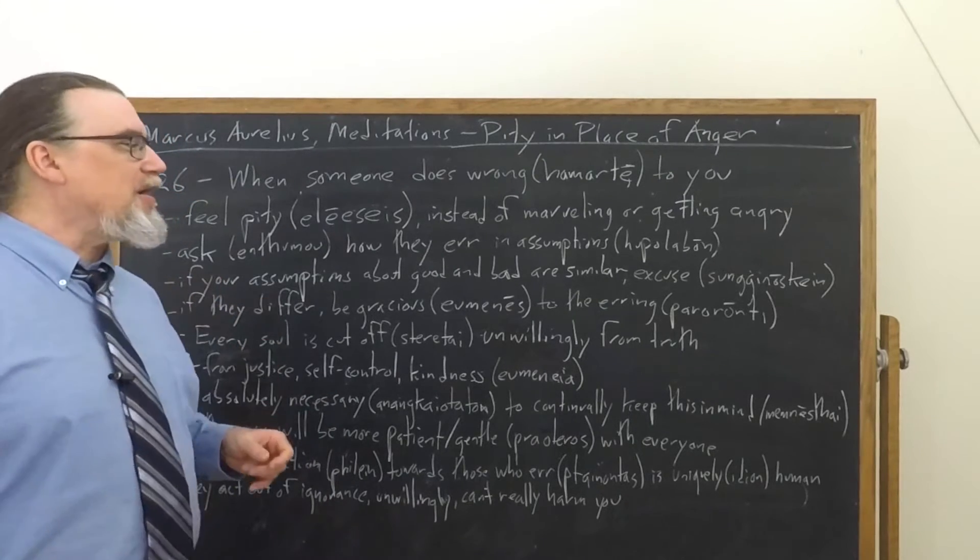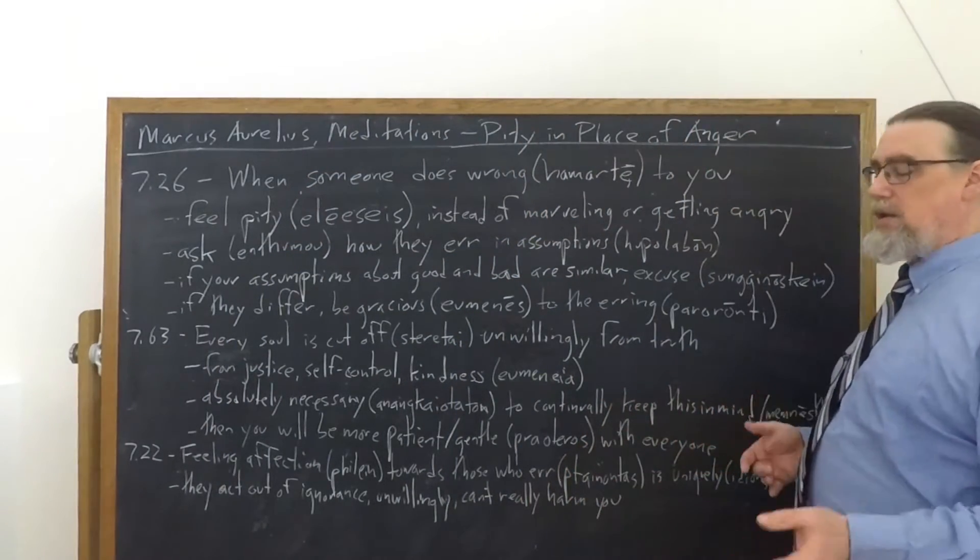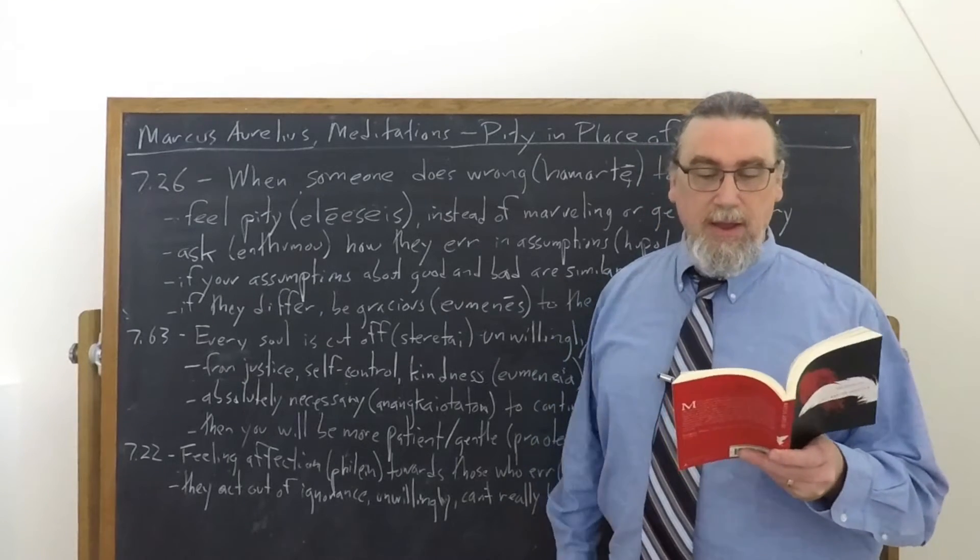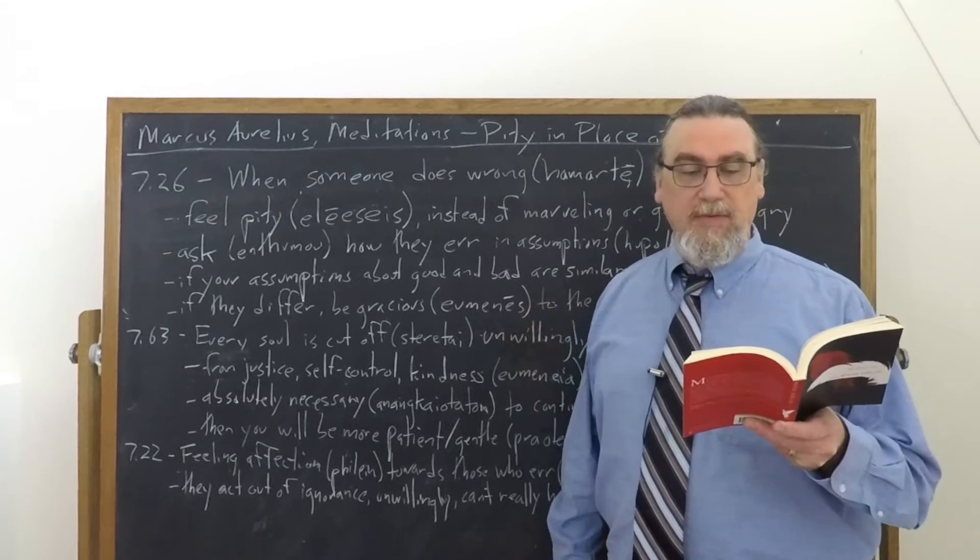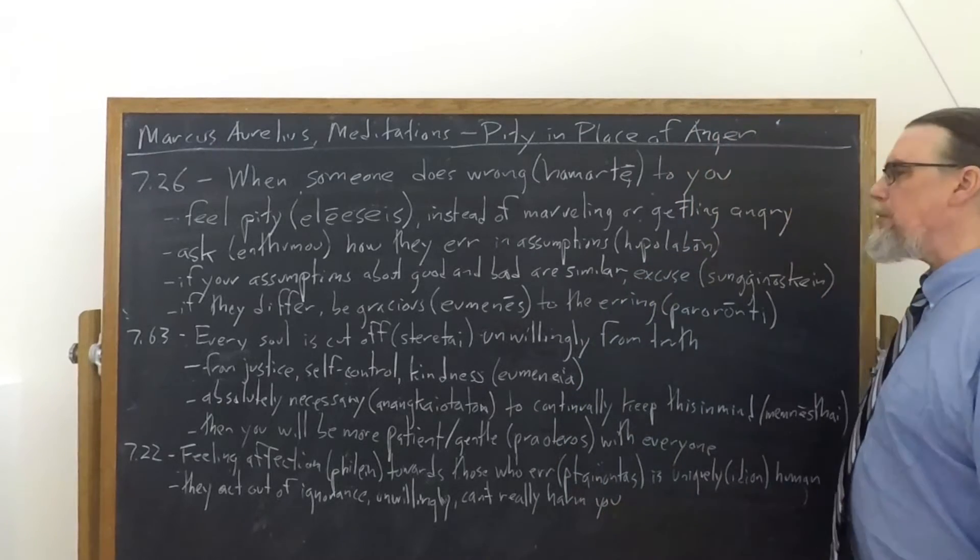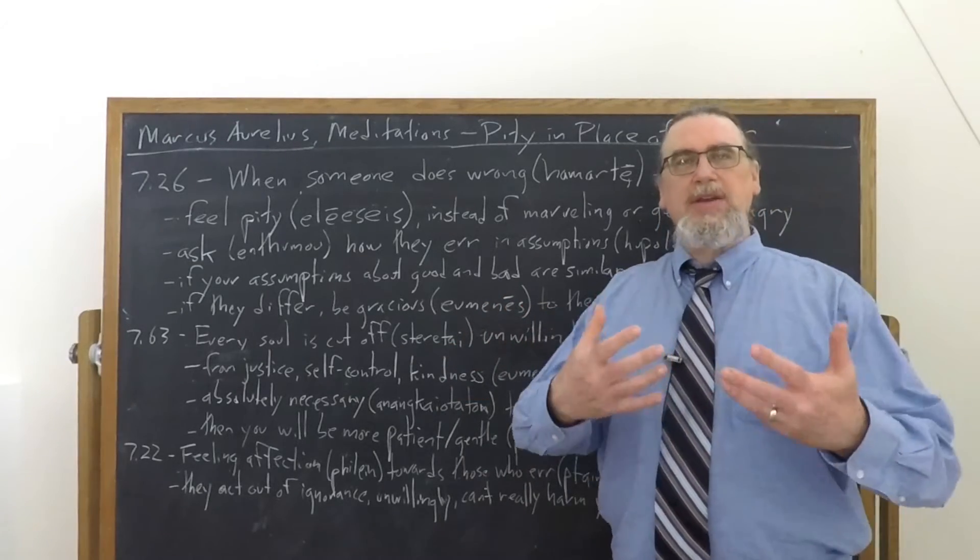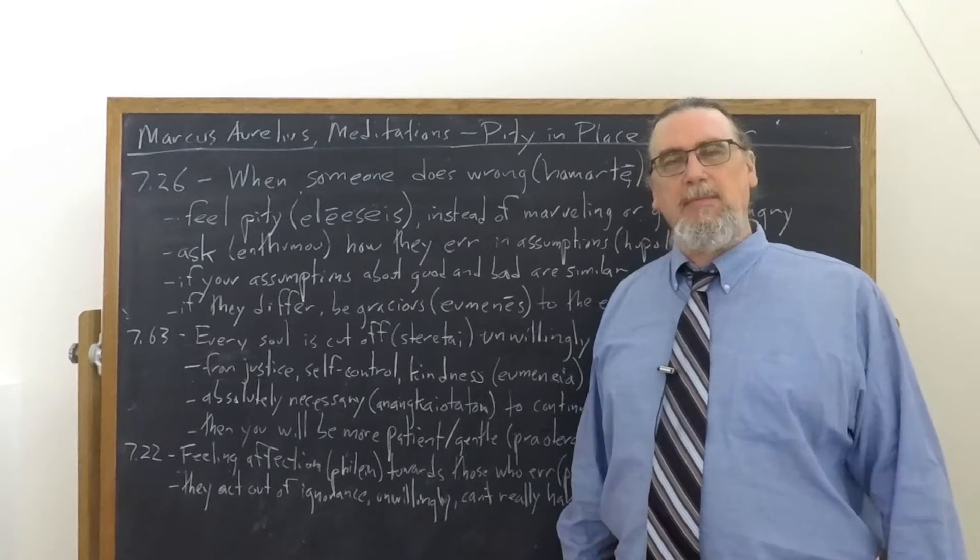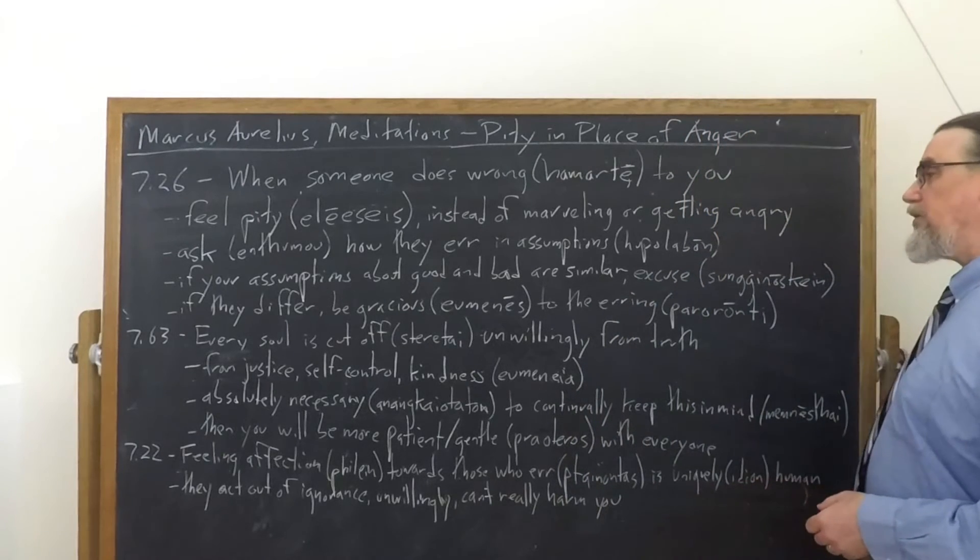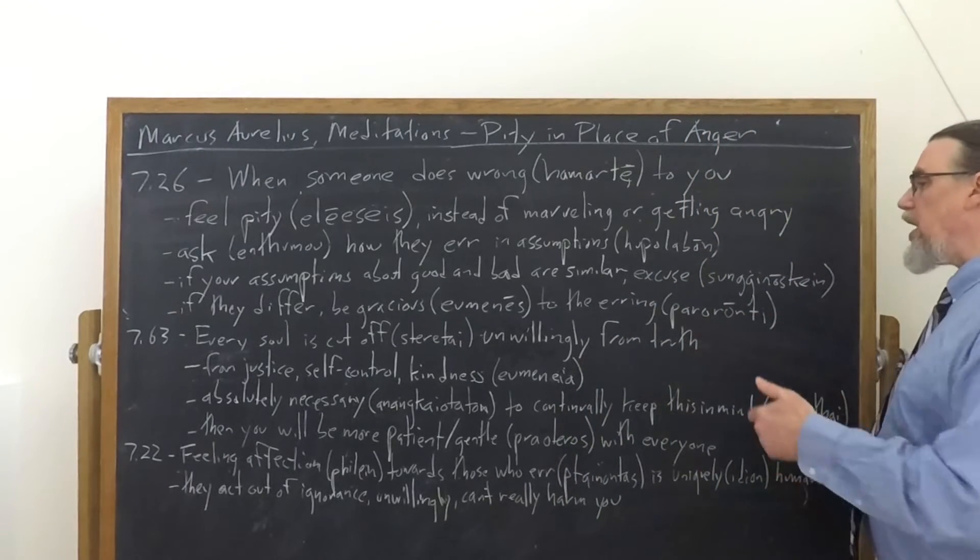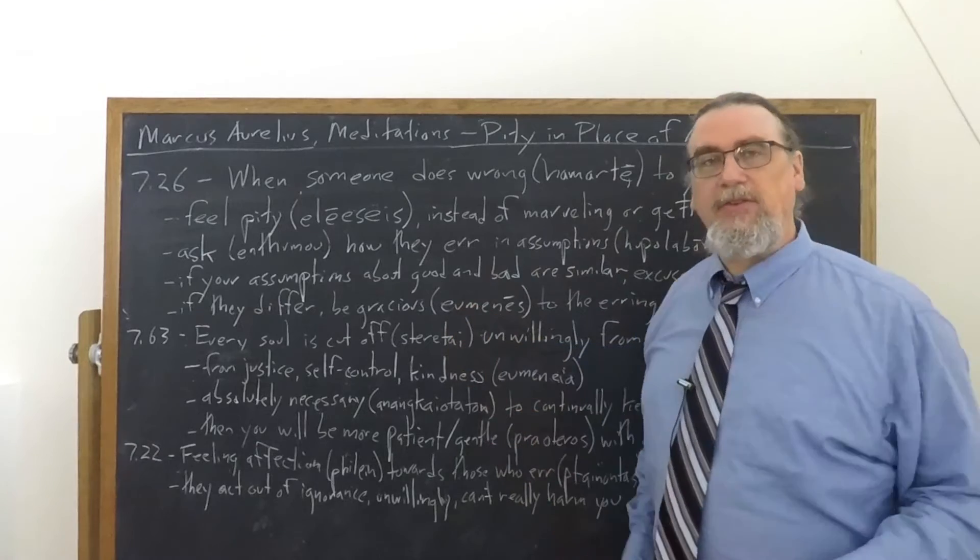But if they differ, if we've got our heads on straight and they don't, then the translation here is a little bit misleading. It doesn't actually say compassion as such. Another way of translating this eumenes is be gracious to them, be decent to them. Treat them like human beings, even though they're messed up. Be peaceful with them is another way of saying it, because they're going astray, paronti.